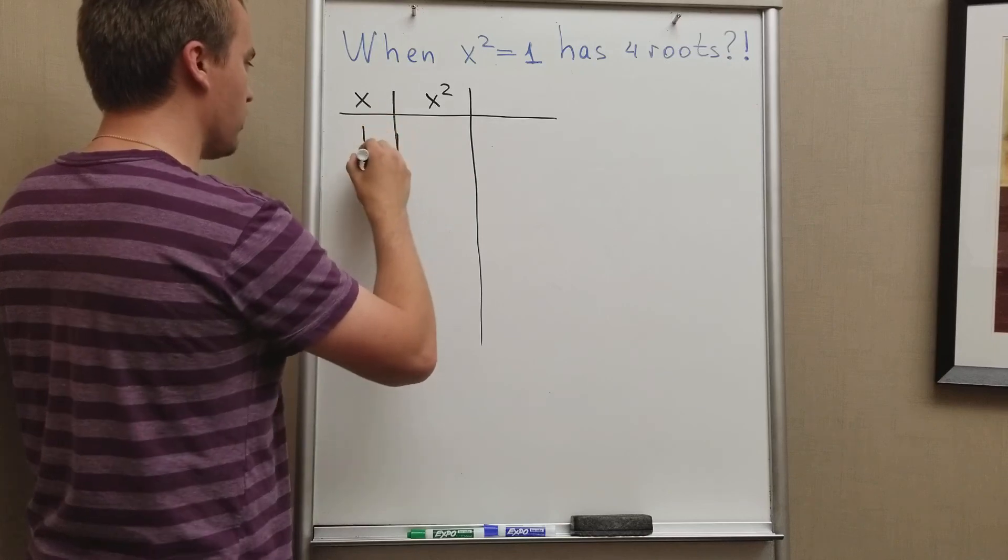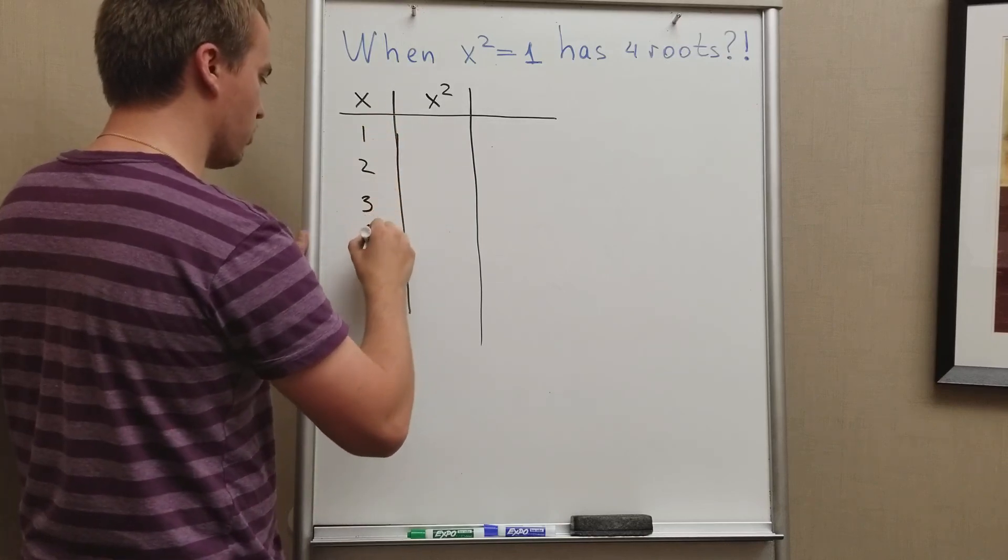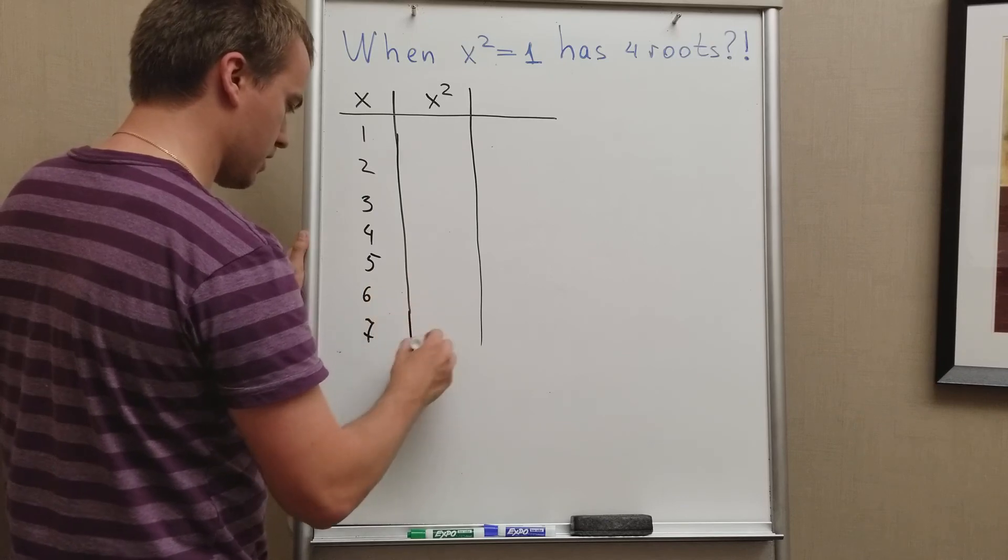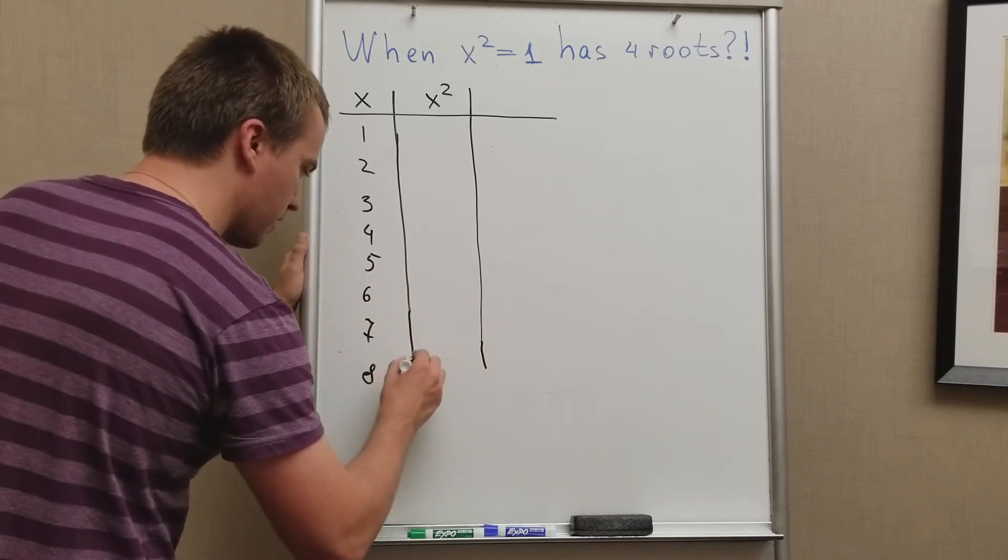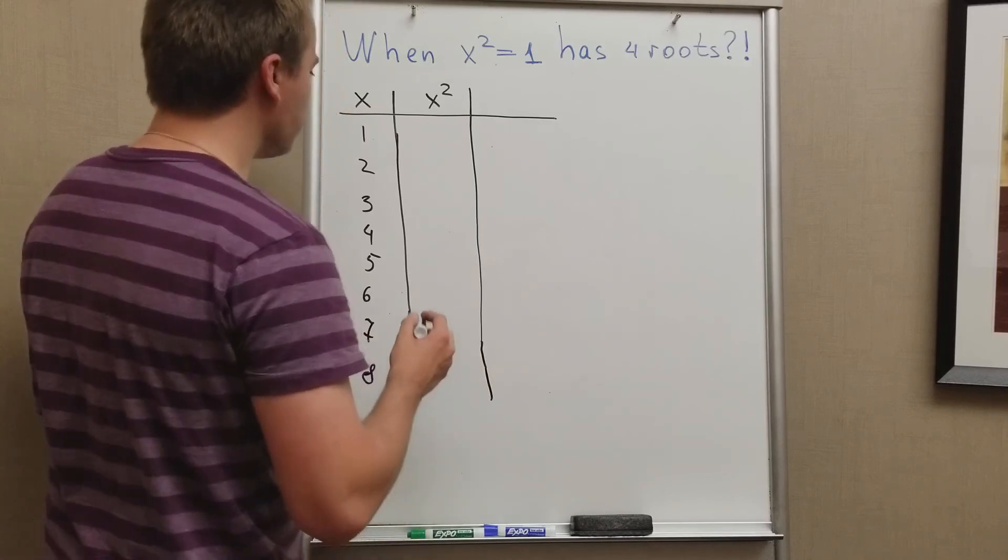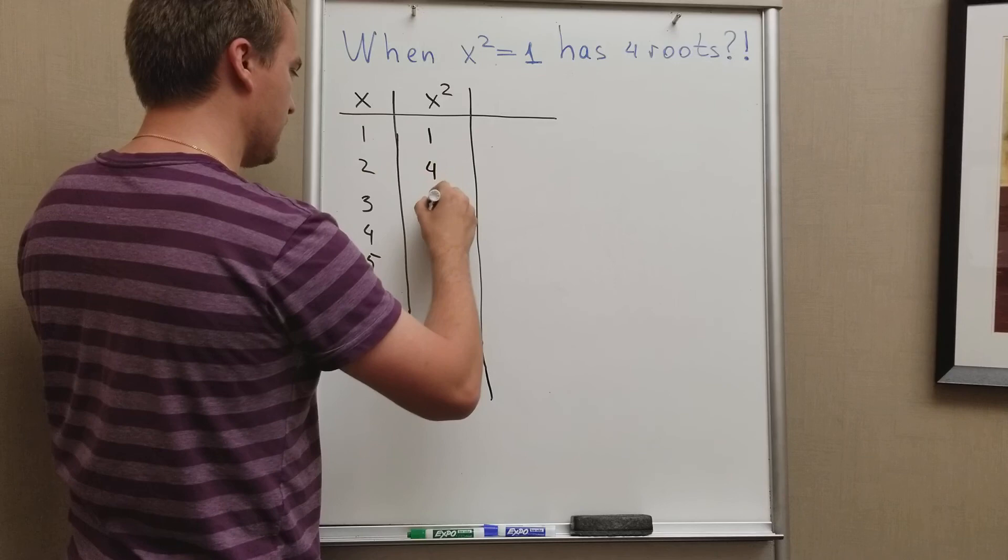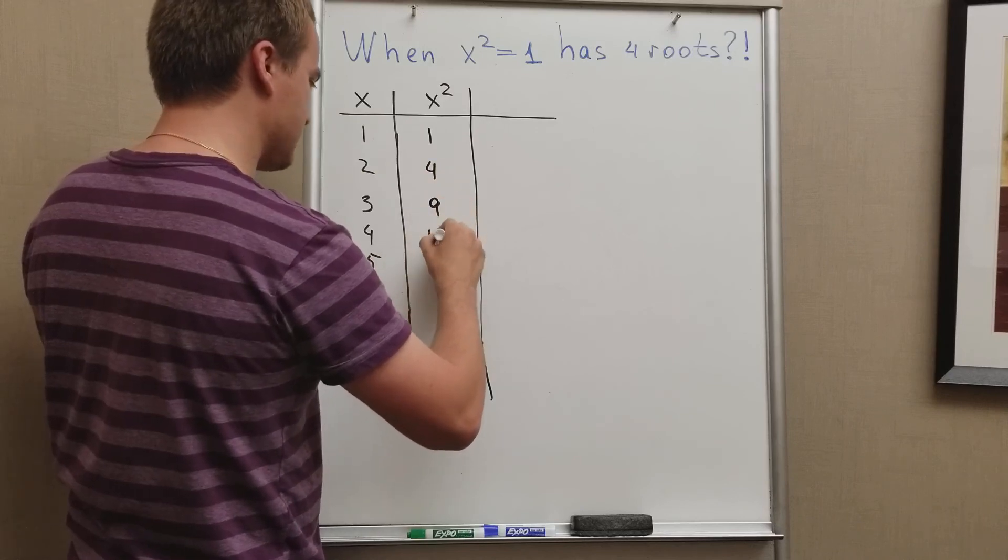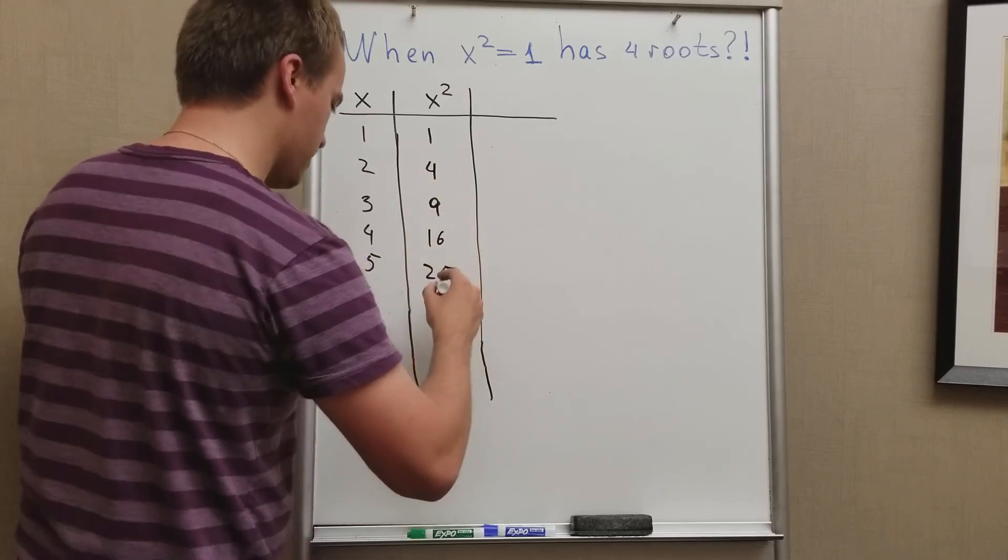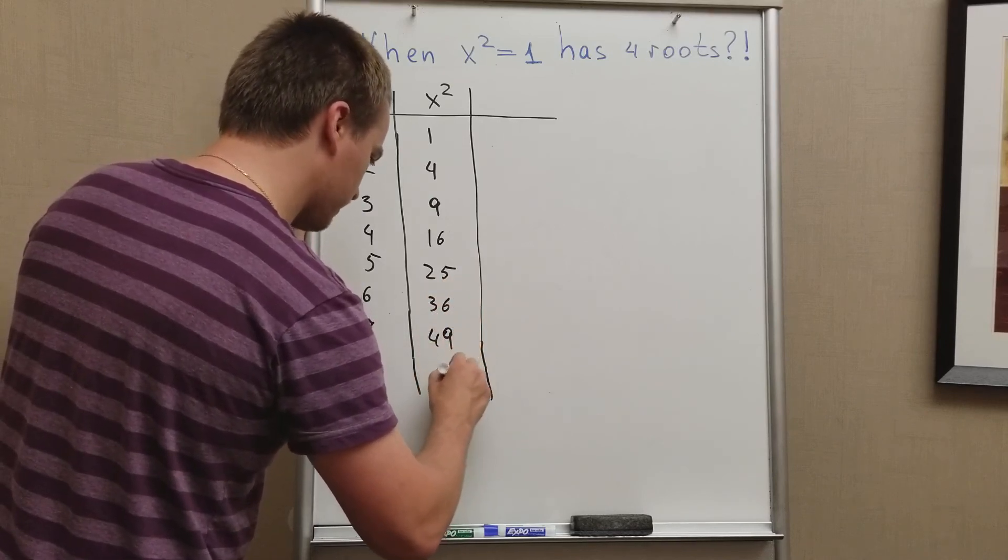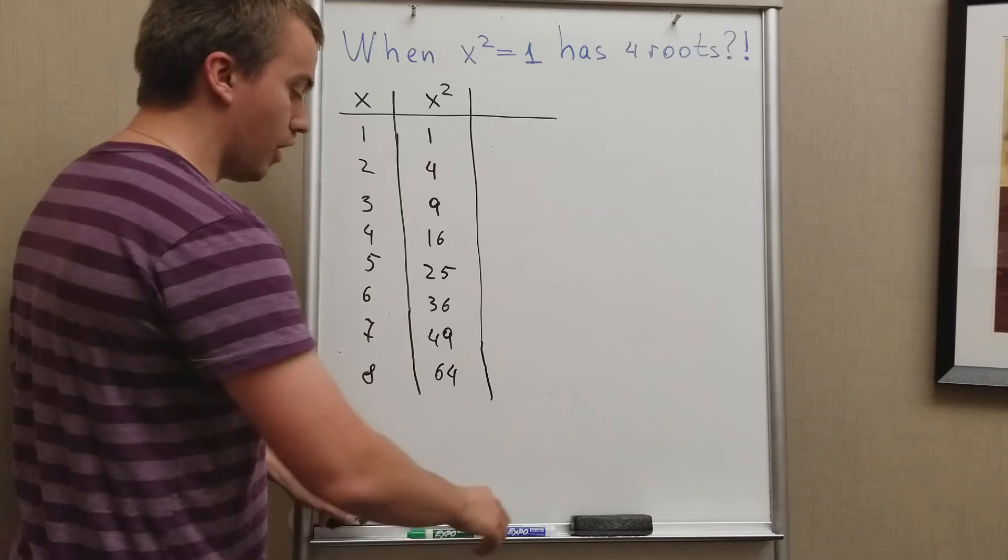I will take values x equal one, two, three, four, five, six, seven, eight. And my next one is going to be one, four, nine, sixteen, twenty-five, thirty-six, forty-nine, and sixty-four.